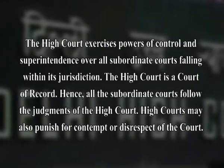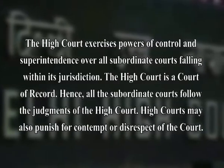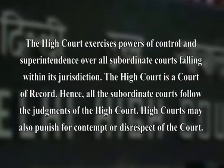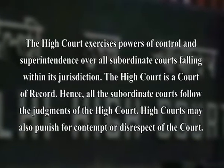Under appellate jurisdiction, the high court hears appeals against the judgments of subordinate courts at the district level. In civil cases, an appeal may be filed before the high court against the judgment of a district judge. In criminal matters, an appeal may be made before a high court against the judgment of a sessions court where the sentence of imprisonment exceeds seven years; that sentence awarded by a lower court has to be confirmed by the high court. The high court exercises powers of control and superintendence over all subordinate courts falling within its jurisdiction. The high court is a court of record; hence all subordinate courts follow the judgments of the high court. High courts may also punish for contempt or disrespect of the court.